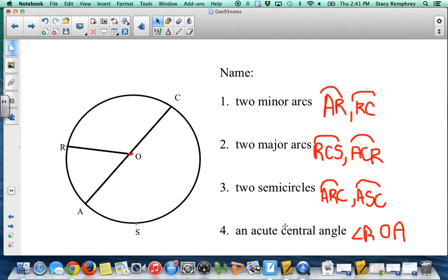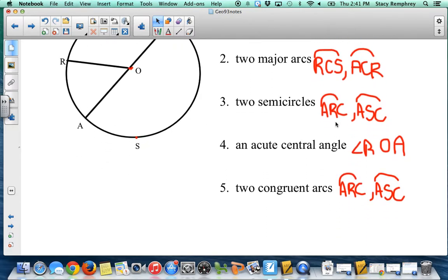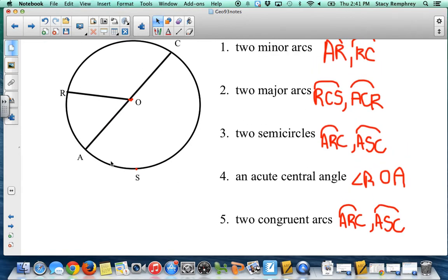All right. So here are your answers. There could probably be more than one. I just used some examples, more than two even. So AR and RC, notice that I only use two letters, that they are each less than 180. In the majors, I use three letters. Notice that when I say RCS, I go R to C to S. So that's over 180 degrees. The semicircles, I did use three letters, because I think that's clear as to which arc I'm talking about. An acute central angle, make sure the vertex is at the center. And two congruent arcs, in this case, are the two semicircles. They both equal 180 degrees.